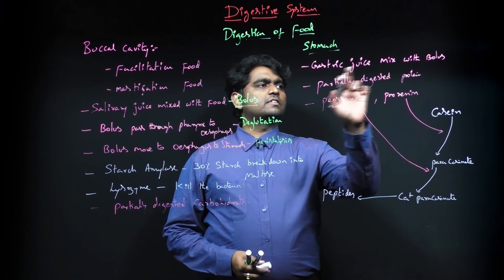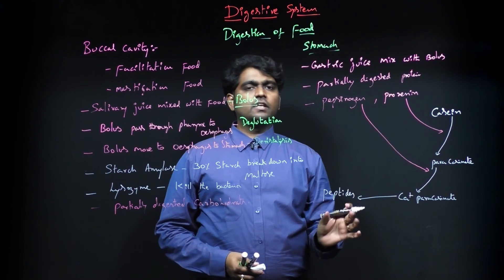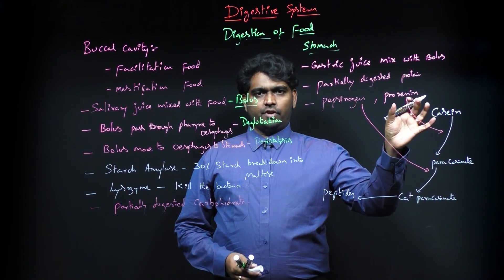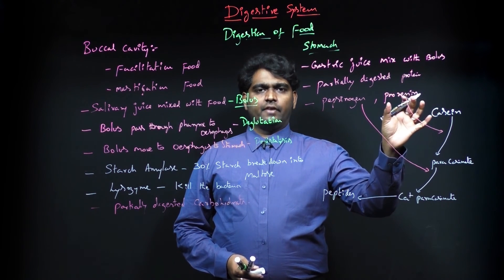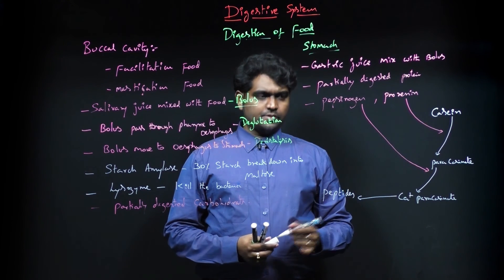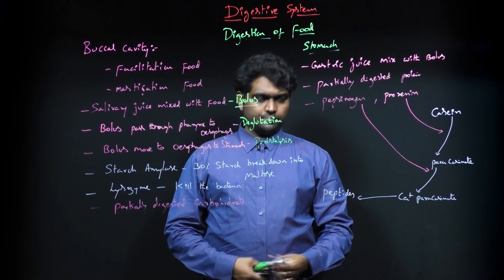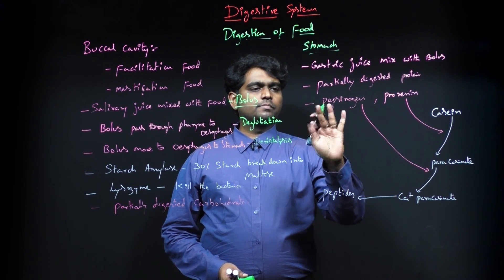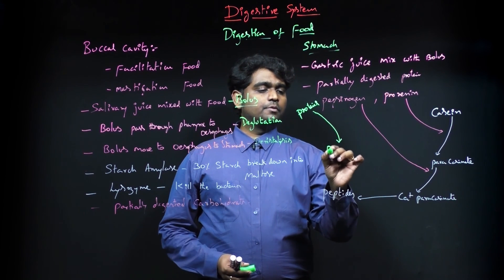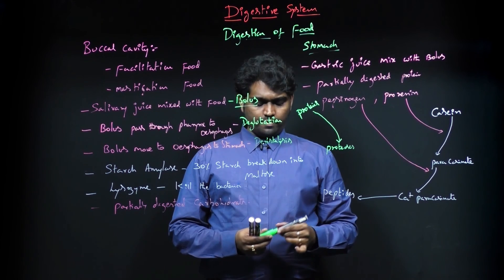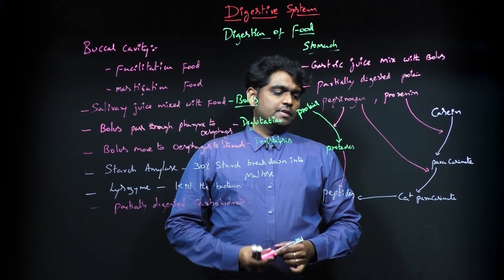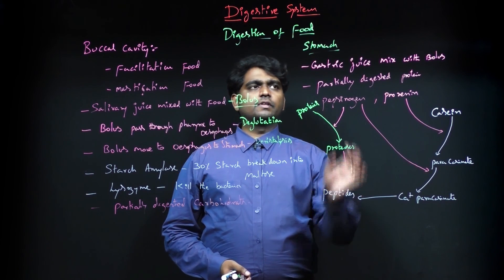In the stomach, gastric juice partially digests proteins. Prorennin, which is present only in the gastric juice of infants, is absent in adults. In adults, pepsinogen is present instead. Pepsinogen breaks down proteins into peptides. These peptides are the end products of stomach digestion.